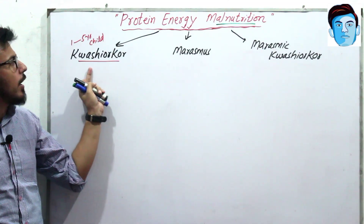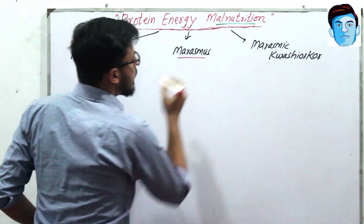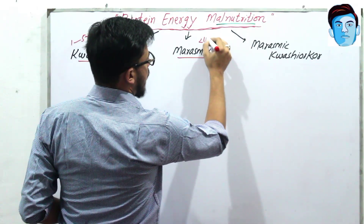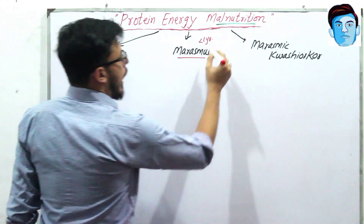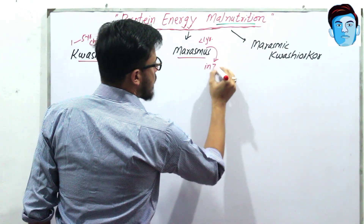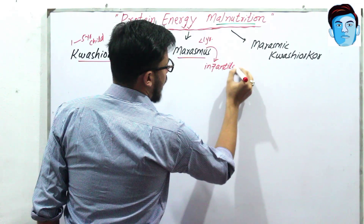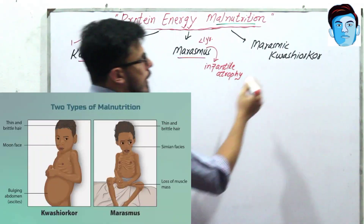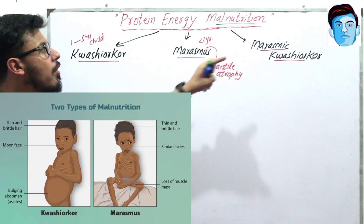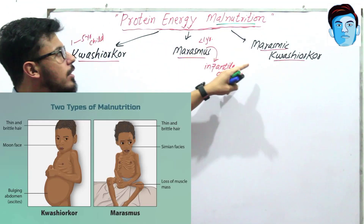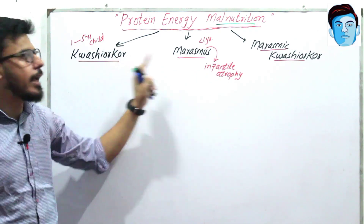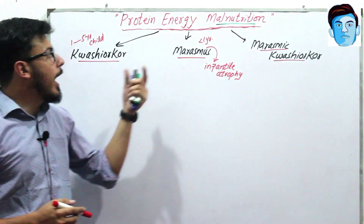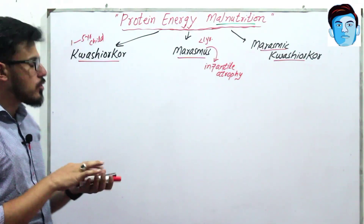Marasmus involves both protein and caloric deficiency, and it is more common in children less than one year of age. That's why it is sometimes called infantile atrophy. Marasmic-Kwashiorkor has features that resemble both Marasmus and Kwashiorkor — it is a combination of both conditions. Today in this video I'll be focusing on Marasmus.